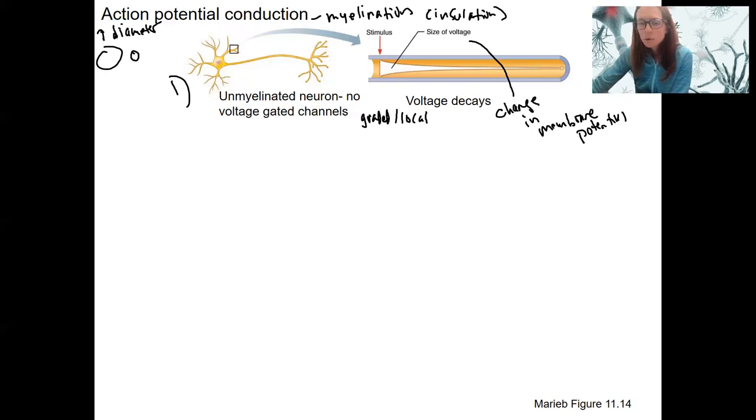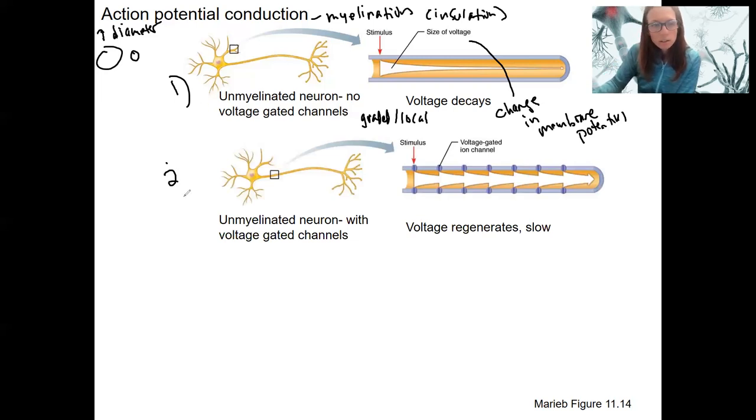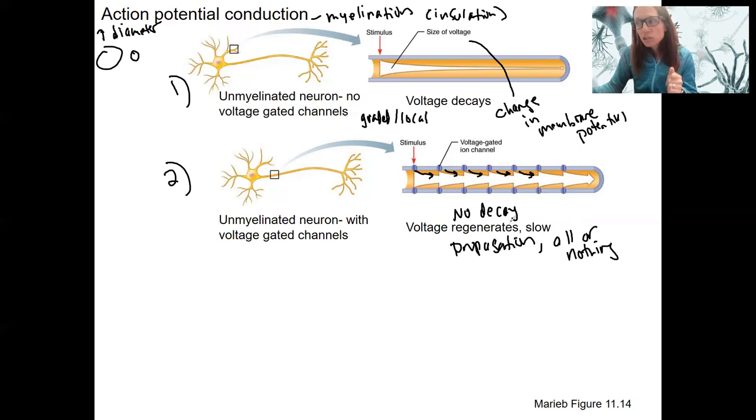So throw in some voltage-gated channels. So our typical neuron does have voltage-gated channels. This is that regeneration, propagation, because of the all or nothing. Due to ion flow, in reality, in both directions, but we're going to have propagation in one direction because of that inactivation. No decay. And that's great. And a lot of your neurons are this way. Relatively slow. Relatively. This is still pretty darn fast. So this is fine for many systems.